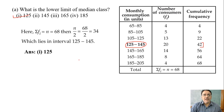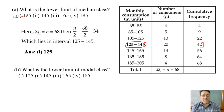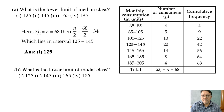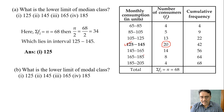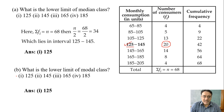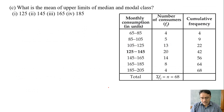Now moving to the second question: what is the lower limit of the modal class? The highest frequency here is 20, which belongs to the class 125 to 145. This is the modal class — the class interval with the maximum frequency. So the lower limit of this class is 125. The correct answer is the first option.